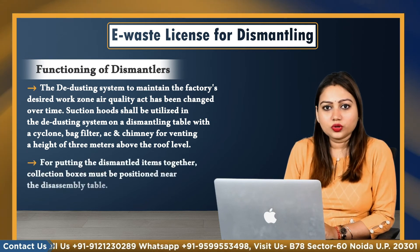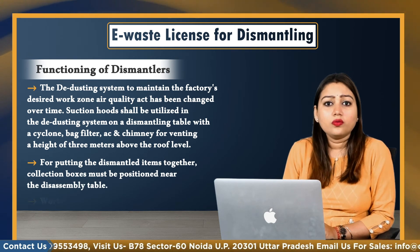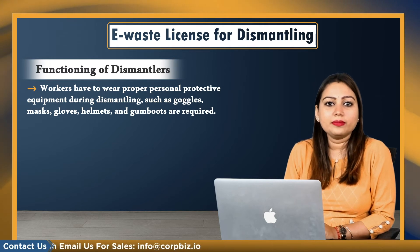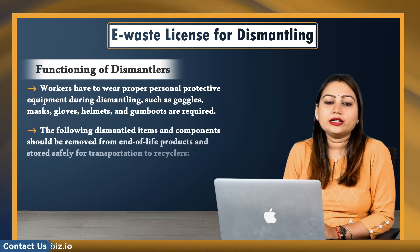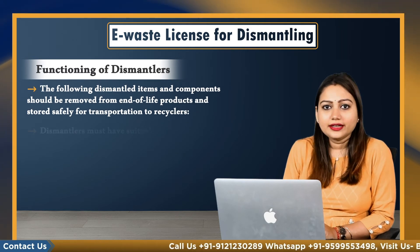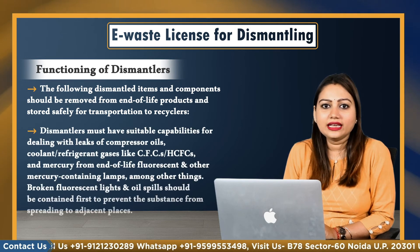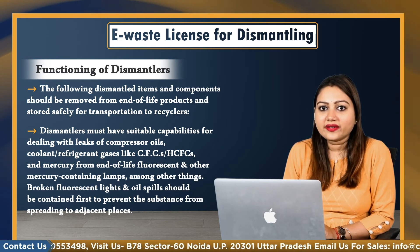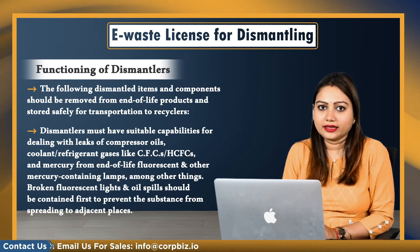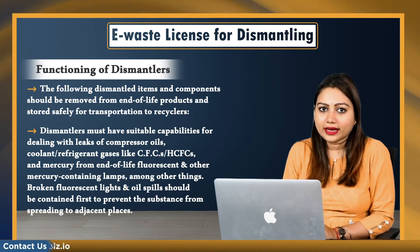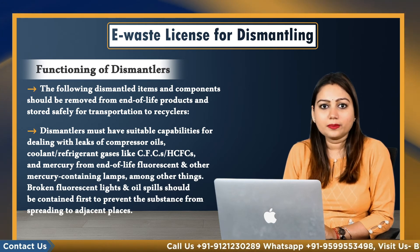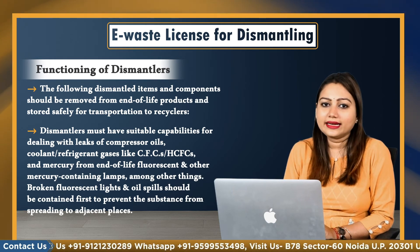For storing dismantled items, collection boxes must be positioned near the disassembly table. Workers must wear proper personal protective equipment during dismantling, such as goggles, masks, gloves, helmets and gumboots. The dismantled items and components should be removed from end-of-life products and stored safely for transportation to recyclers. Dismantlers must have suitable capabilities for dealing with leaks of compressor oils, gas, coolant, refrigerated gases like CFC and HCFC, and mercury from end-of-life fluorescent and other mercury-containing lamps. Broken fluorescent lights and oil spills should be contained first to prevent substances from spreading. Dry sand, absorbent pads, stabilizing chemicals and other methods may be used for later transfer to hazardous waste facilities.